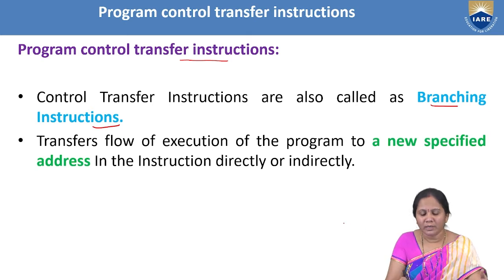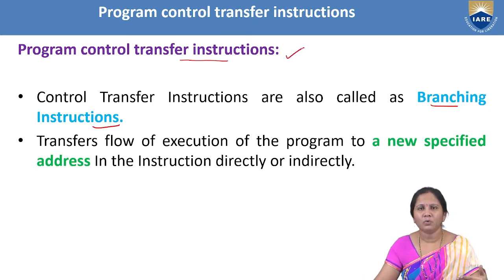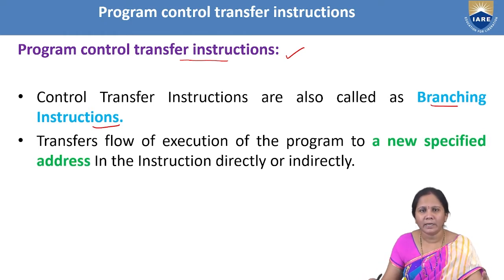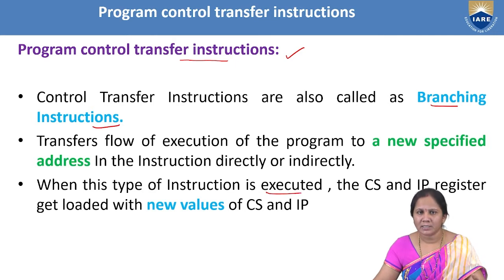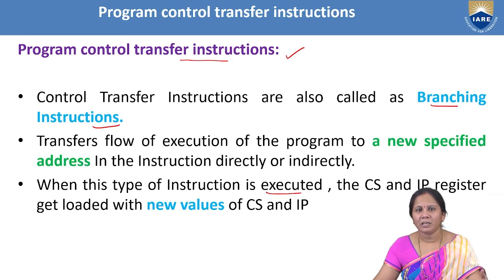When this type of instructions are executed, the control will be transferring to the new specified address which we have indicated as a part of an instruction, directly or indirectly. When this type of instruction is executed, the CS and IP registers — that is, CS register (code segment register) holding the segment address, and IP register (instruction pointer register) holding the offset address — will be loaded with the new values of CS and IP when the control transfer has been happened.